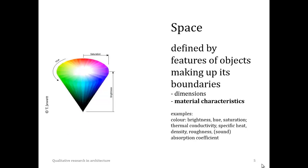Other features that you can measure include the material characteristics of a space's boundaries. For instance, the colour of a material can be expressed quantitatively in terms of its hue, saturation, and brightness. Other examples of material characteristics that can be measured include the material's thermal conductivity, specific heat, density, roughness, or absorption coefficient.